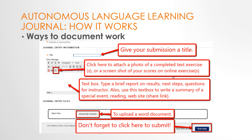Ways to document work: once you click on 'Create Journal Entry,' you will enter the journal entry information area. In the title box, write a descriptive title for your journal entry. The picture icon is where you click to upload a photo of a completed text exercise or screenshot of scores on an online exercise. Use the text box area to type a brief report on results, next steps, or questions for the instructor. You can also use this area to write a summary of a special event or information obtained from a website — be sure to share the link. Below the text box, there is a 'Browse My Computer' link you can use for uploading a Word document. Finally, in the lower right corner, don't forget to click the 'Post Entry' button.